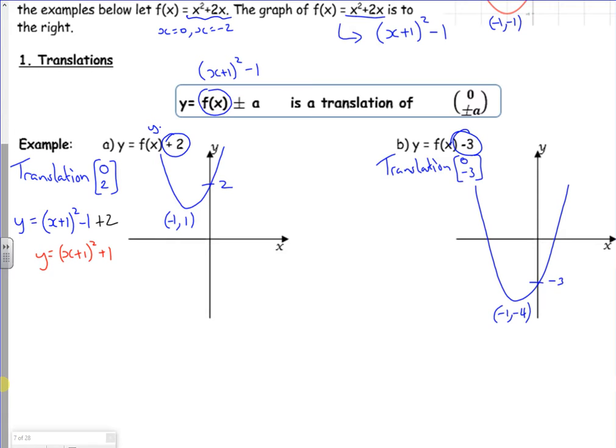There's a minus 1, minus 4. I could track the roots as well, but I don't need to. So in terms of what the equation looks like, it'd be y equals x plus 1 squared minus 1. And then I'm taking 3 off it. So my new equation would be y equals x add 1 squared minus 4. And that matches if you look at the vertex again.